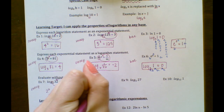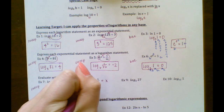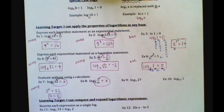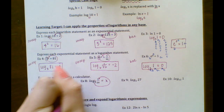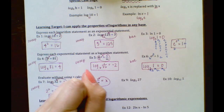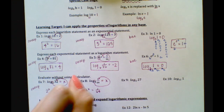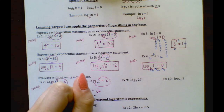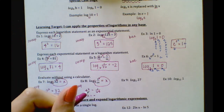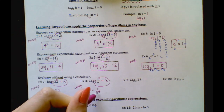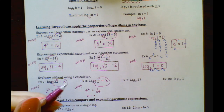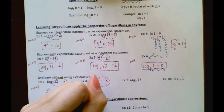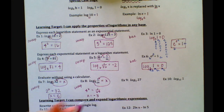Number 8: set this equal to x and swoop around. We have 4 to the x power equals 1 over 64. Any time you have a fraction — 1 over something — that exponent is going to be negative. So ask yourself: 4 to what power gives me 64? How many times do you need to multiply 4 by itself to get 64? That's 3, so x equals negative 3.